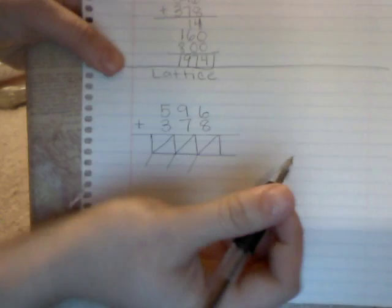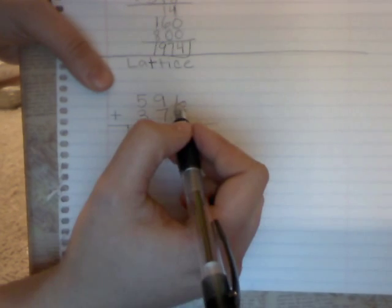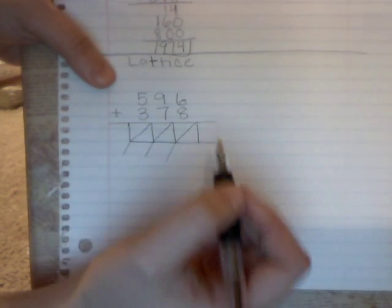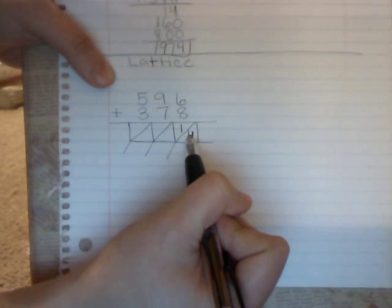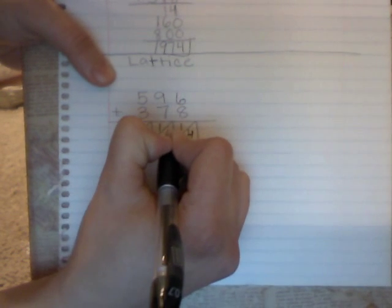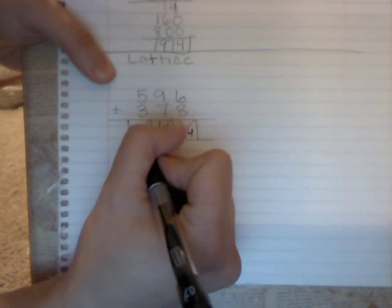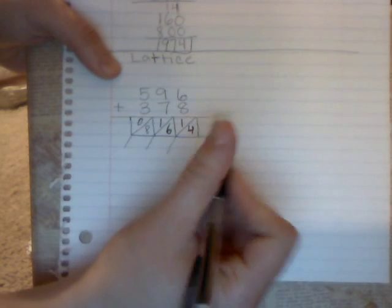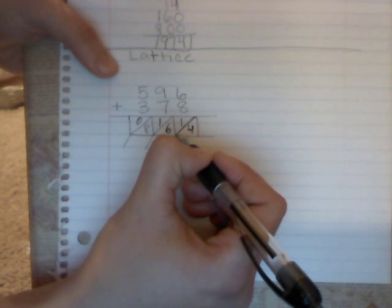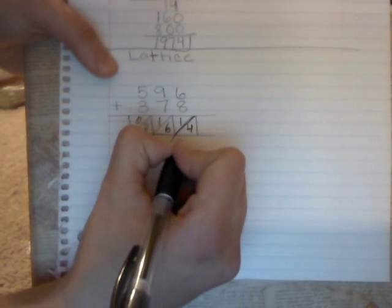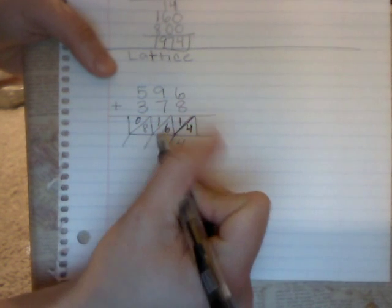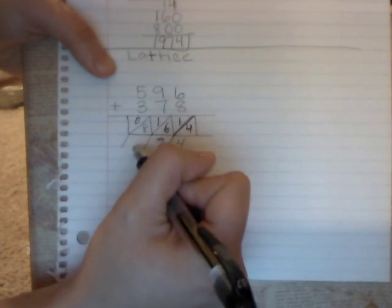Now we're going to do the lattice method. For the ones place we're going to have 14, and so the 1 for the 14 goes above and then the 4 down here. In this one, 9 plus 7 is 16, so we're going to have the 1 here and the 6 in this part. Then 5 plus 3 is 8, so nothing goes in this one but 8 goes here. How this works is the lattice parts are the columns you're going to add together. So this one is 1 plus 6 is 7, and then 1 plus 8 is 9, and you have 974.